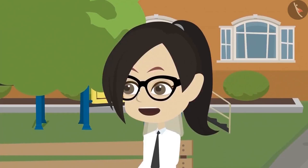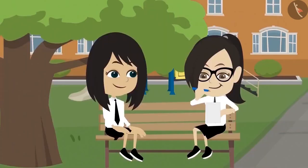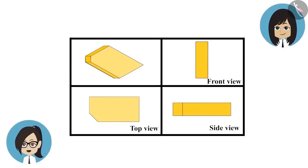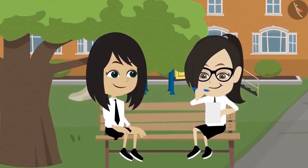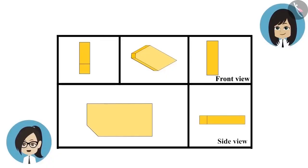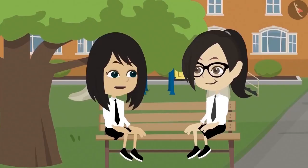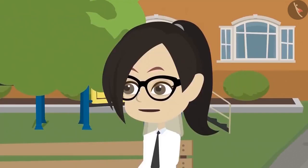Now you have seen all three views. Try to tell me the view from the left side. First, I will try to make it in 3D. Now, I can easily draw its left side. See, it has been made like this: first a big rectangle and then a small rectangle. You were able to draw the left view from the right view, top view and side view. Maybe that's why only three views of an object are enough. Yes, even I think so.